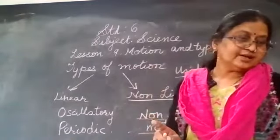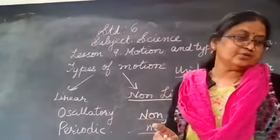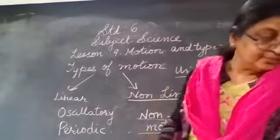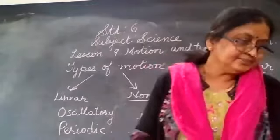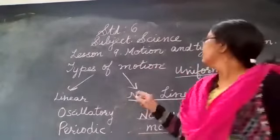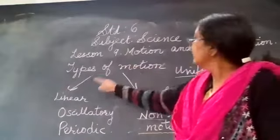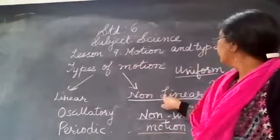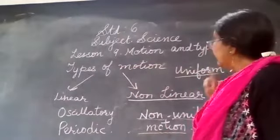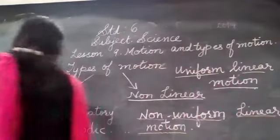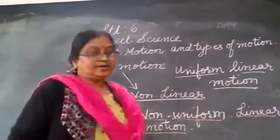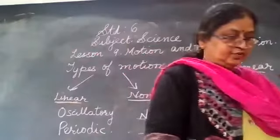So there are two main types of linear motion: uniform and non-uniform. Linear motion can be uniform and non-uniform, so these are of two types — uniform as well as non-uniform motion.